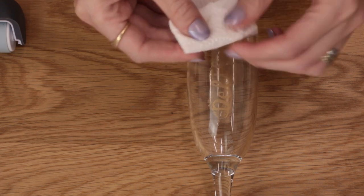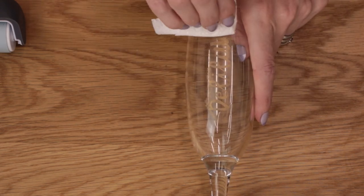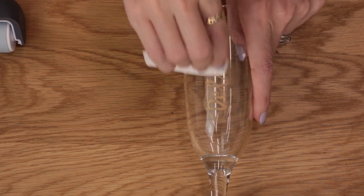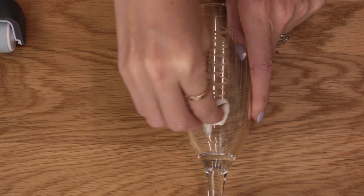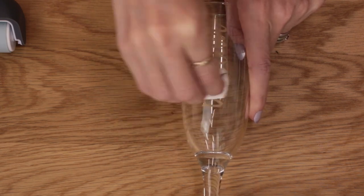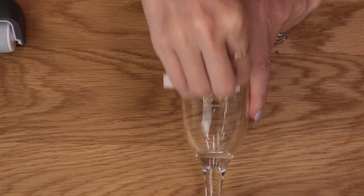And you're going to really buff in and as you're buffing you'll see that it actually starts becoming removed from the unetched pieces of glass. So anywhere that is not etched this Rub and Buff will not stick to.